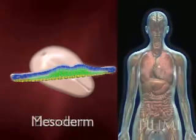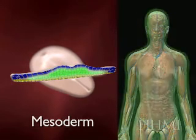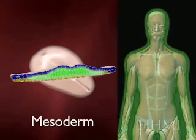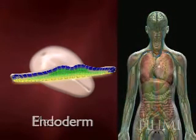The middle part, the mesoderm — shown in green here — gives rise to the muscle, including the kidneys and the heart.